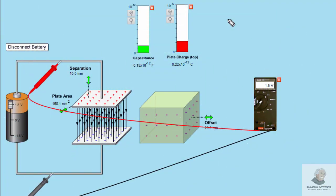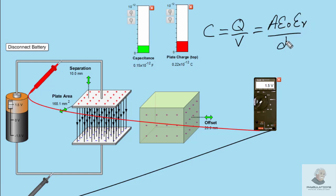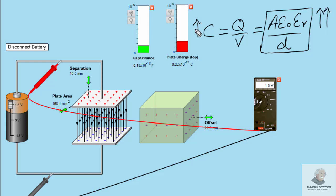The next thing I will show is how capacitance can be increased or decreased. Since capacitance does not change by changing voltage or charge, how can it be changed? You have read that C equals Q over V, and further derivation gives C equals A·ε₀·εᵣ over D. These are the parameters on which capacitance depends. If we increase the area, capacitance increases. If we add a dielectric medium, capacitance increases. If we decrease the distance between the plates, capacitance increases.